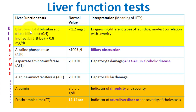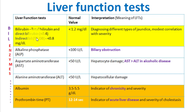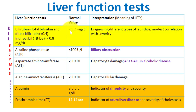Let's begin with the bilirubin test. In the laboratory, we do total bilirubin and direct bilirubin. Direct bilirubin is conjugated bilirubin. Indirect bilirubin, which is unconjugated, is calculated by subtracting direct from total. The normal range of direct bilirubin is less than 0.4, indirect is less than 0.8, and total bilirubin is less than 1.2. You can remember this as a round figure: 4, 8, and 12.